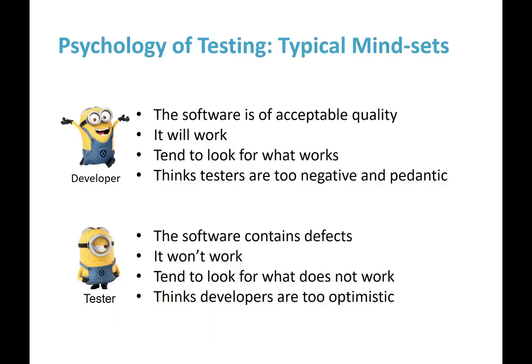The developer is developing software of acceptable quality and can have an 'it'll do' reaction to it. They tend to focus on what actually works and the positives. Their opinion of testers is that they're always too negative and pedantic. The tester, on the other hand, always has the preconceived notion that software contains defects — and where humans are involved in software development, we are going to have defects. They look for what doesn't work rather than what does, and tend to think developers are too optimistic when evaluating their software.